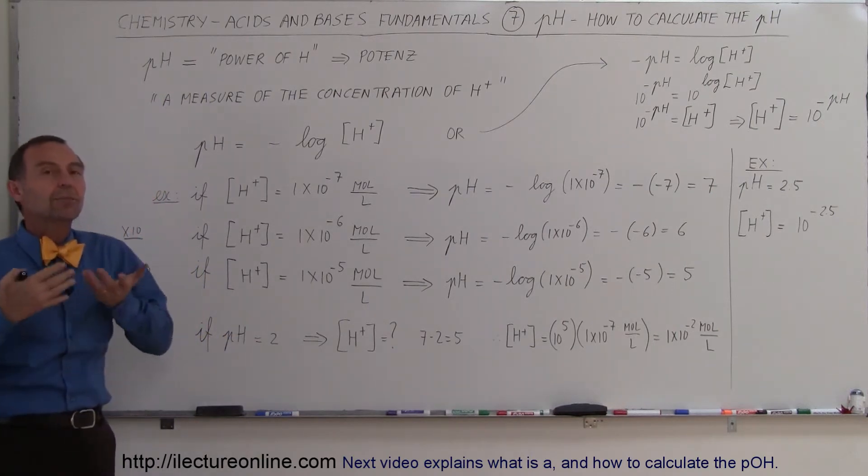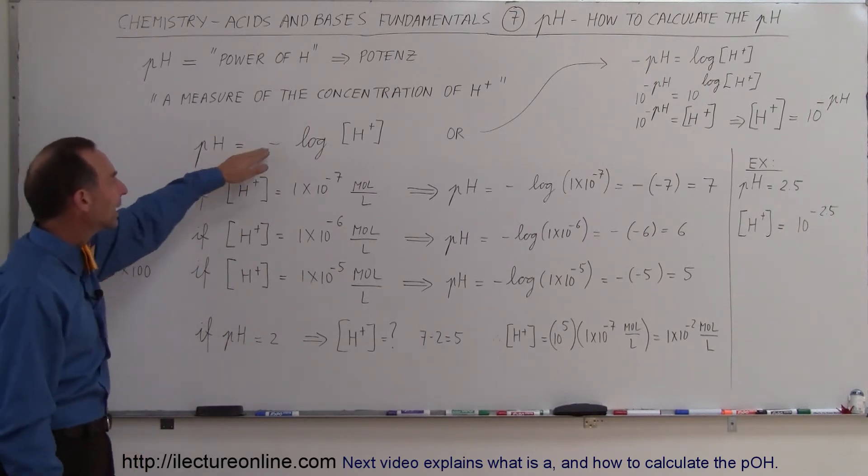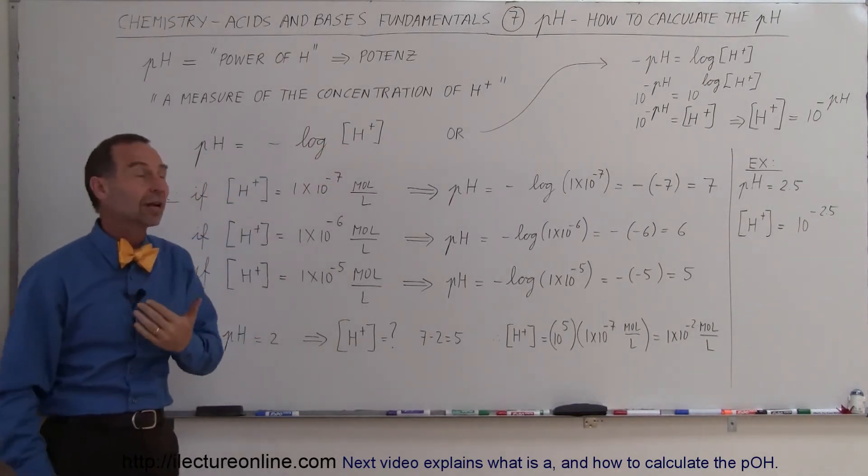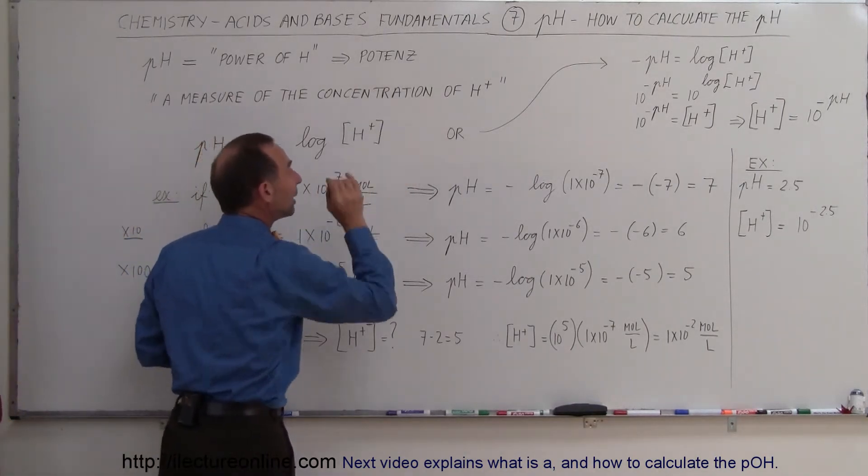So what does it really mean? What is the potence? What is the power of H? Well, pH is defined as the negative of the log of the concentration of the hydrogen ion. Remember, the concentration is the number of moles of hydrogen ions per liter of solution.